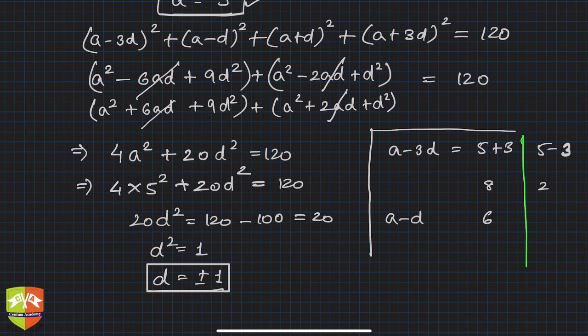And then a plus 3d is 2 in this case, so I am taking d as minus 1 and then plus 1, and then this one will be 8. So the two APs or two four terms in AP are 8, 6, 4, 2 or 2, 4, 6, 8. Both are correct solutions.